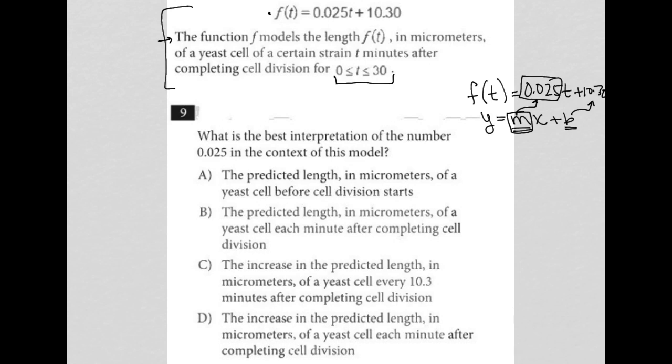What does the slope mean under these circumstances regarding the length of the yeast cell? Choice A says the predicted length in micrometers of a yeast cell before cell division starts. Not at all. Slope has nothing to do with a starting point. Slope is like a changing amount. It's your constant amount of change in the line. So A is not correct.